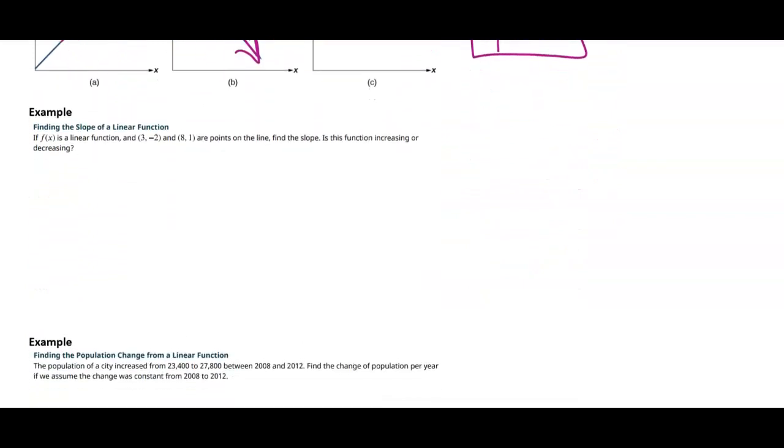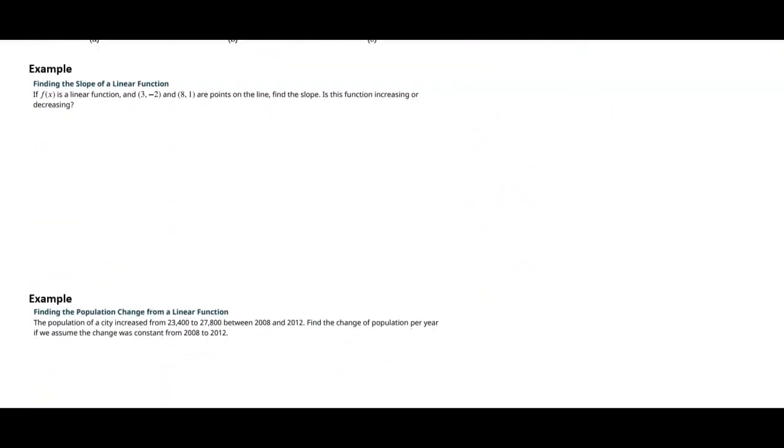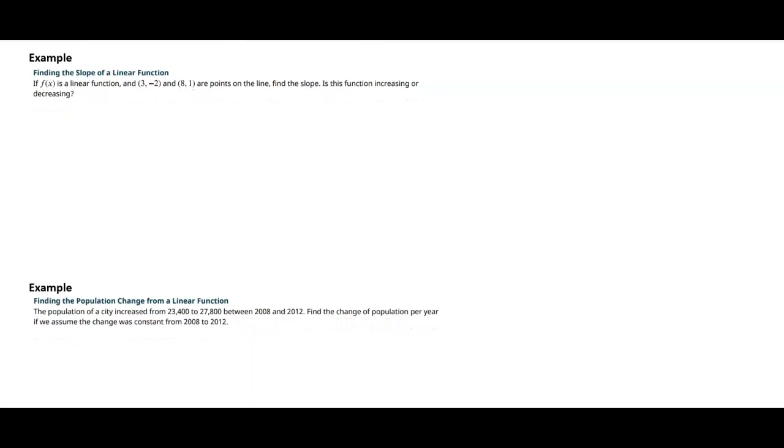Let's look at this example and find the slope, then talk about if we think that line is going to be increasing or decreasing. I'm going to call this point one, so that's x1, y1. I'm going to call this point two, x2, y2.